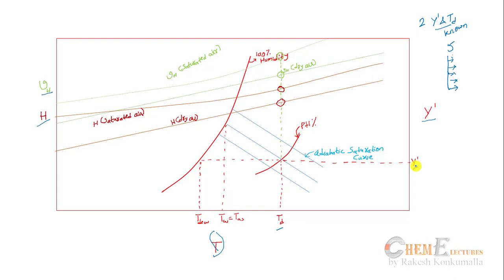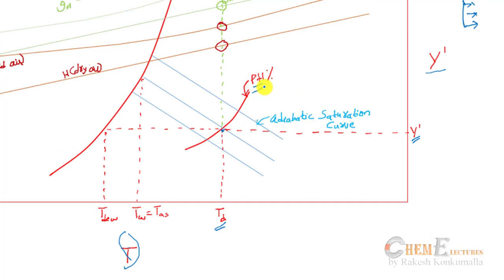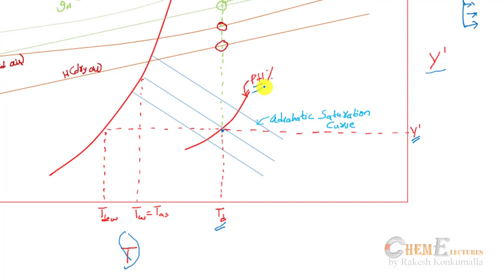This is my absolute humidity Y' and my dry bulb temperature at this point. There are different curves ranging from 0 to 100 percent humidity — 10%, 20%, 30% — in this graph. Wherever the point of intersection of T_d and Y' falls on this graph, the curve at that intersection gives the percentage humidity.